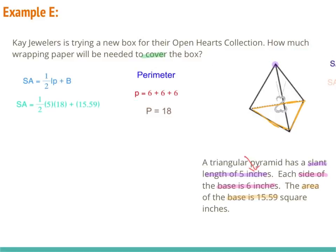Now we have everything: one-half times 5 (slant length) times 18 (perimeter), plus big B which is 15.9. Following order of operations, we multiply first: one-half times 5 times 18 gives 45, then 45 plus 15.9 gives us 60.59 square inches, since we're talking about surface area.